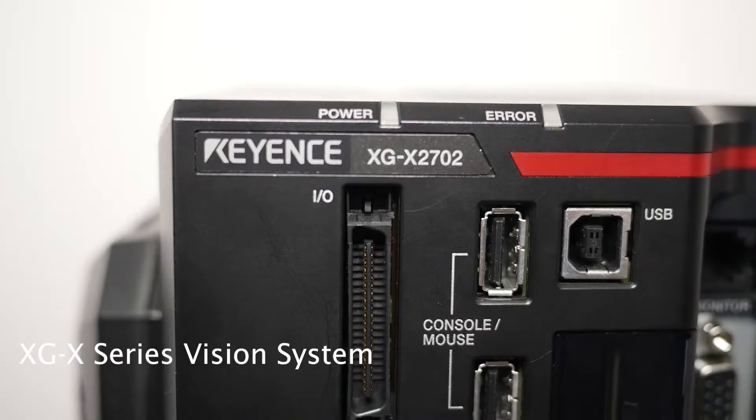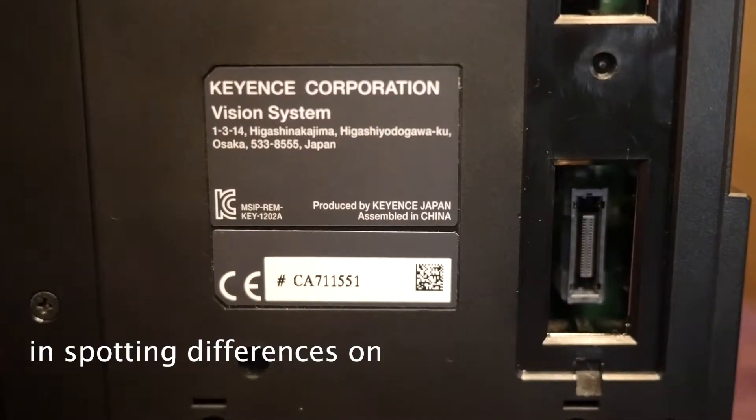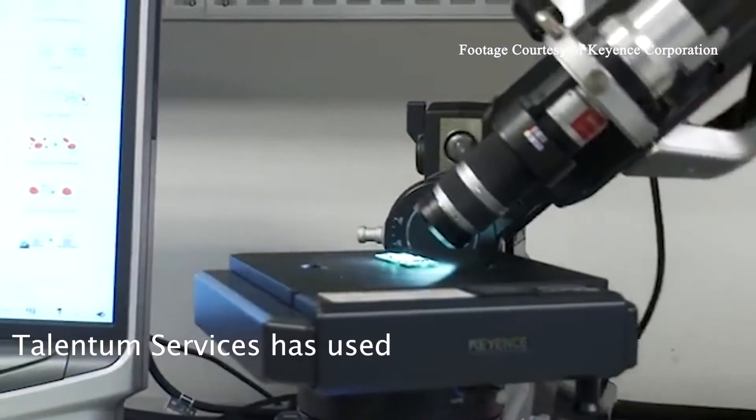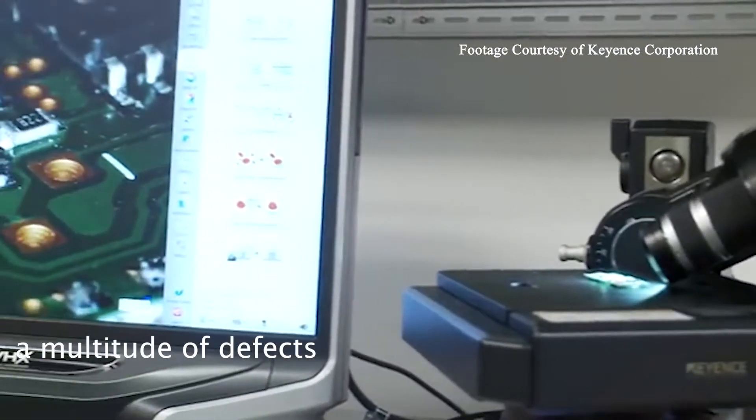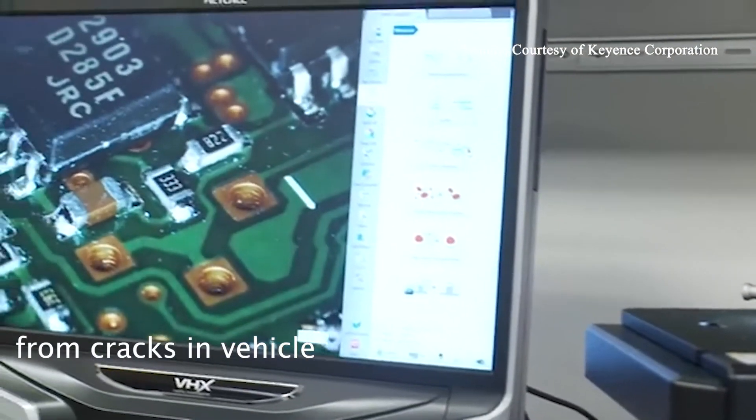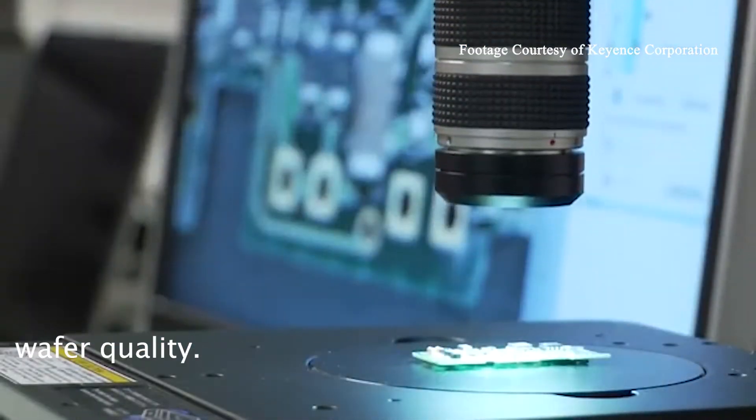How beneficial is the Keyence XGX series vision system in spotting differences on an assembly line? Talentum Services has used vision systems to detect a multitude of defects, from cracks in vehicle paint to semiconductor wafer quality.